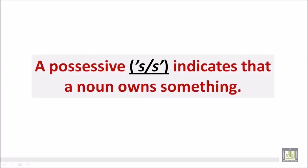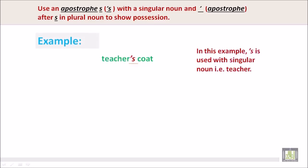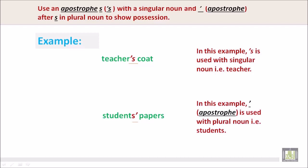A possessive singular s or plural s indicates that a noun owns something. Use an apostrophe s with a singular noun, and an apostrophe after the s in the plural noun to show possession. For example, 'teacher's coat' uses apostrophe s with a singular noun. 'Students' papers' uses the apostrophe on the outside of the s with a plural noun.